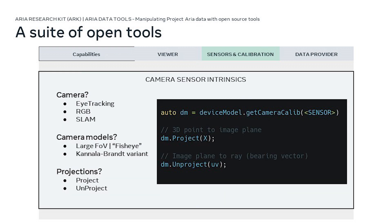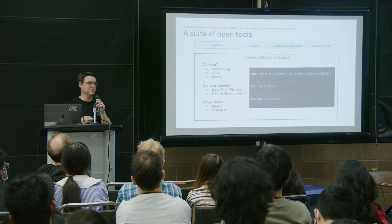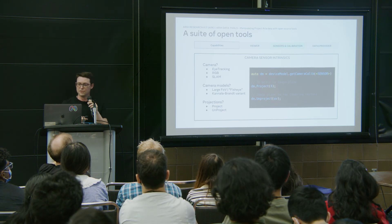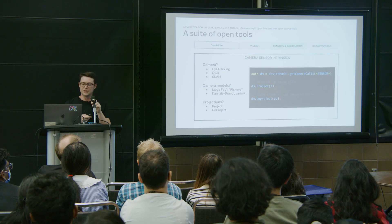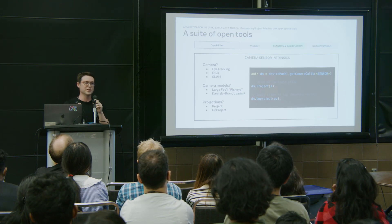For camera intrinsics — understanding how the projection of the world is done — we use what we call projection and unprojection functions. The projection functions allow you to project 3D points to 2D image points, and unproject allows you to project 2D points to 3D rays, enabling multiple view geometry easily. Project ARIA uses two different kinds of distortion camera models depending on the lens distortion: one for the eye camera tracking facing our eyes, and the other for world sensing with a larger field of view.